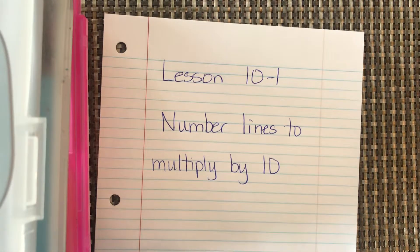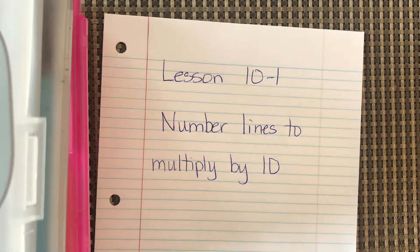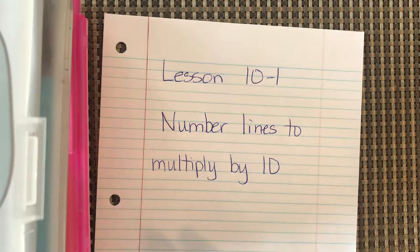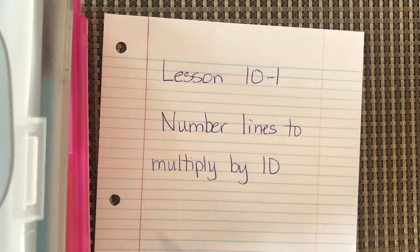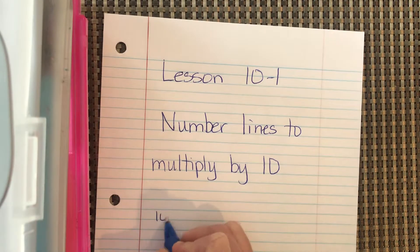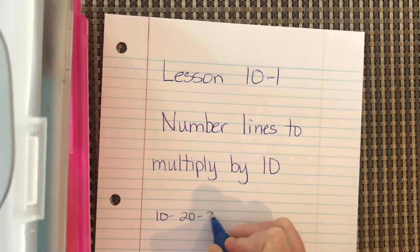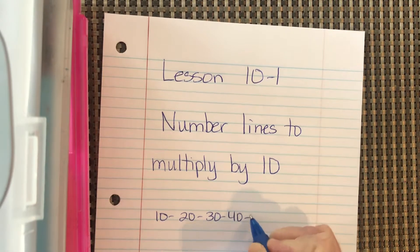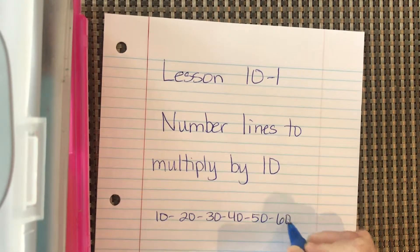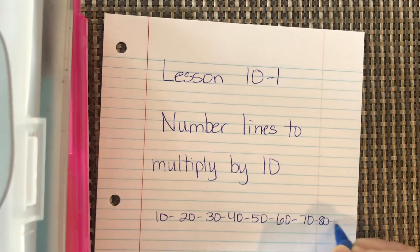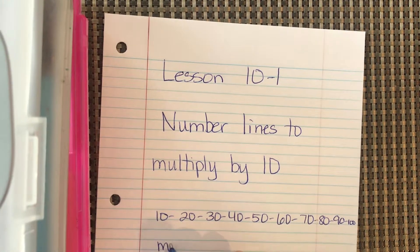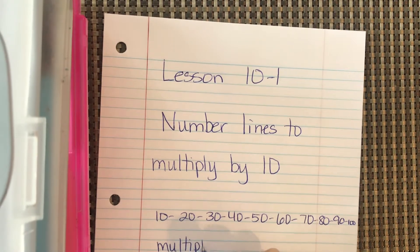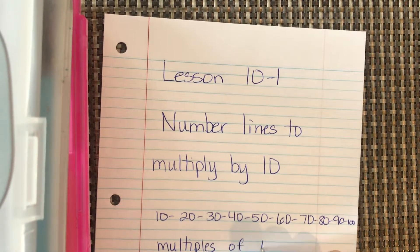Okay, so we know that when we're multiplying by 10, we are counting by 10s. And we know that if we count by 10s, we're going to get 10, 20, 30, 40, 50, 60, 70, 80, 90, 100. These are called multiples, multiples of 10.